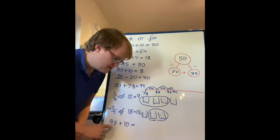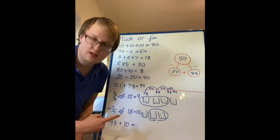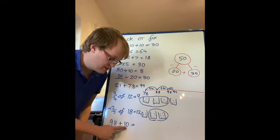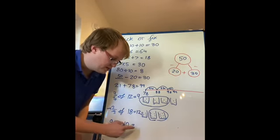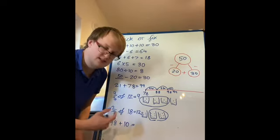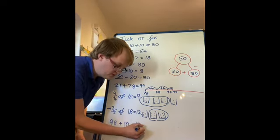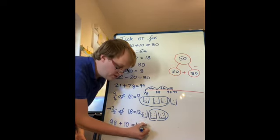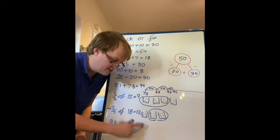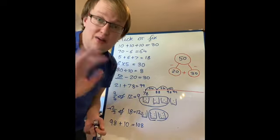And last one: 98 add 10. Because sometimes we can find it a bit tricky to go past 100. So 98 add 10, we know it's going to end in the same amount of ones, because 10 doesn't have any ones. So we know it's going to end in an 8. 98 add 10: 99, 100, 101, 102, 103, 104, 105, 106, 107, 108. Well done. Let me know how you got on and keep practicing. See you later, bye bye.